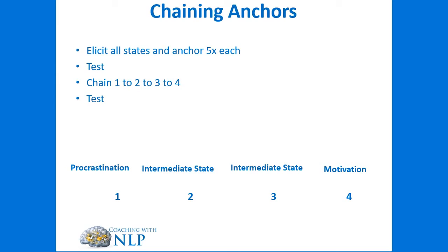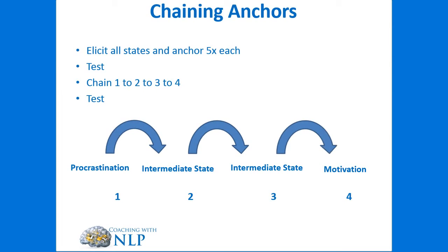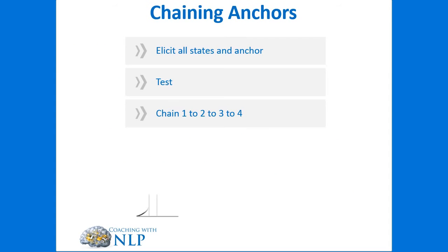To chain the states together — you'll see a live demo after this — you go from one state, and as soon as the client goes into it you go to the next, then the next, then the next. So from procrastination, as the client peaks, you fire intermediate state one whilst holding procrastination, then release procrastination. Then fire intermediate state two when the first intermediate state is at its peak, release state one. When intermediate state two peaks, fire motivation, then release intermediate state two. Then you test by firing procrastination, and the client should carry themselves through each state to end up at motivation.